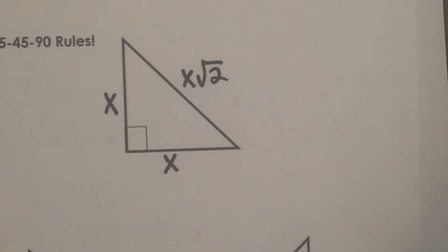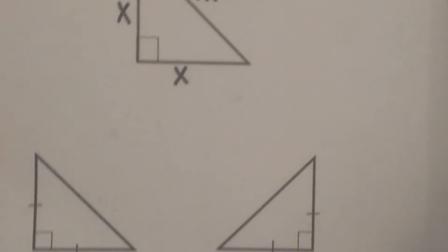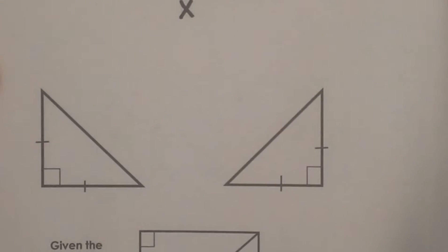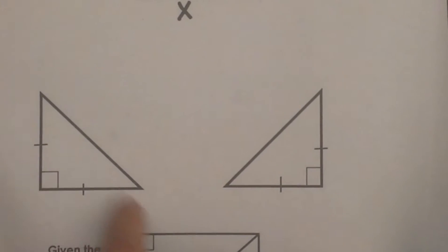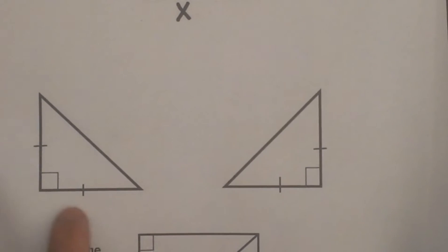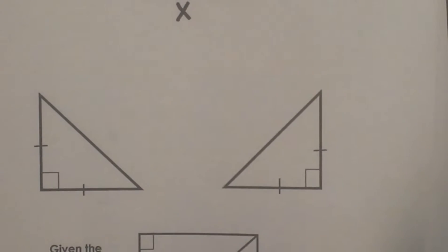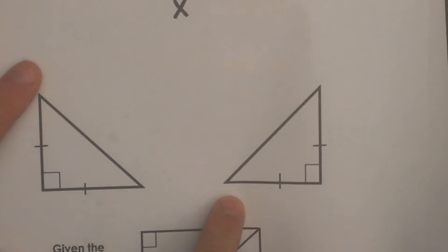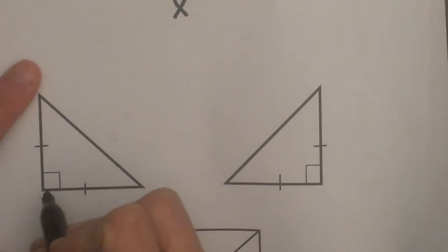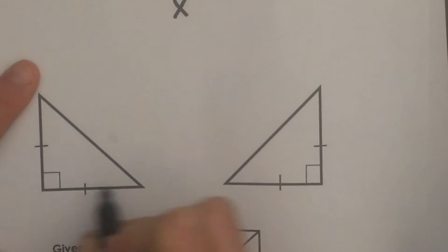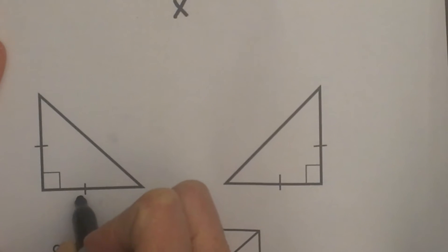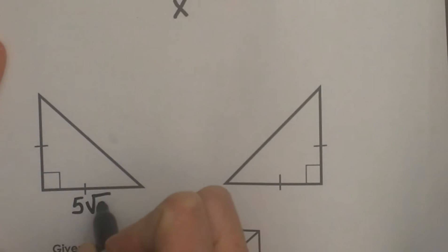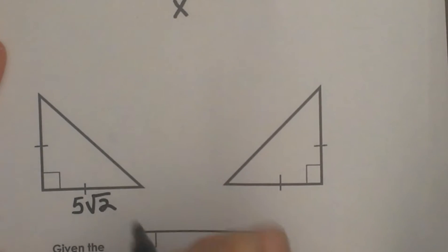Now I am going to show you how I teach this. Here is our first example. I am going to start off by giving you the easier side. Let's say that we have the side of this leg and it is 5 square root 2.